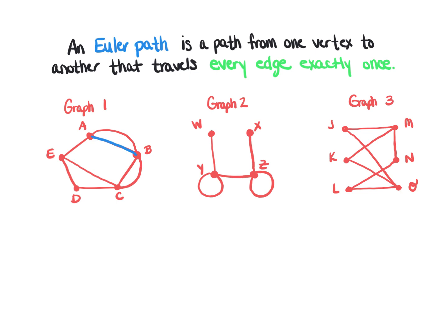Looking at graph number one, an Euler path might look like the following: travel from A to B, then B to C, then back to B, then back to A, then to E, then to D, to C, and finish back at E. That is not a unique Euler path, but notice I traced over every edge exactly one time.